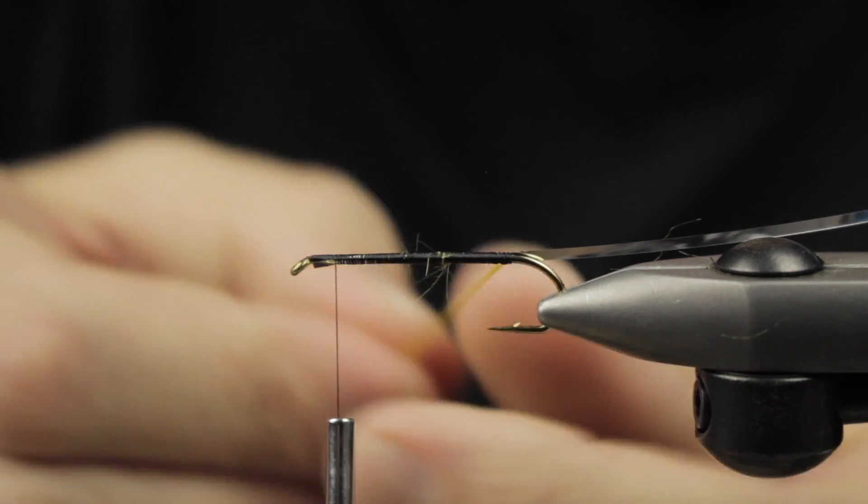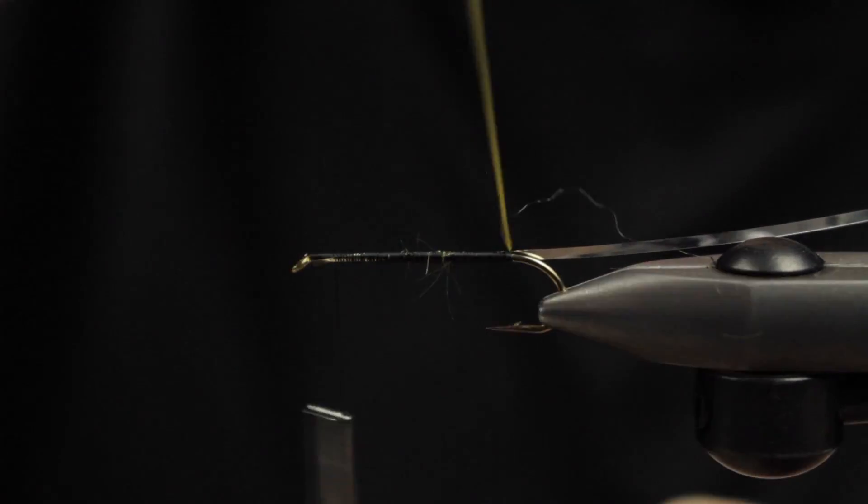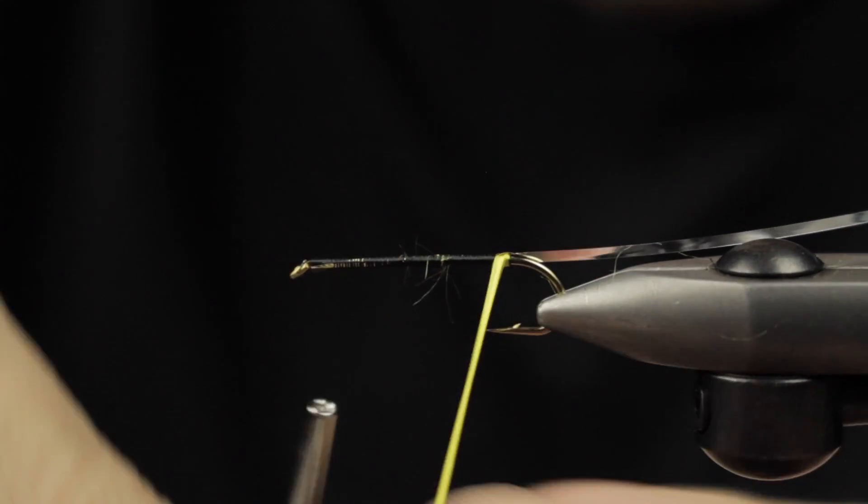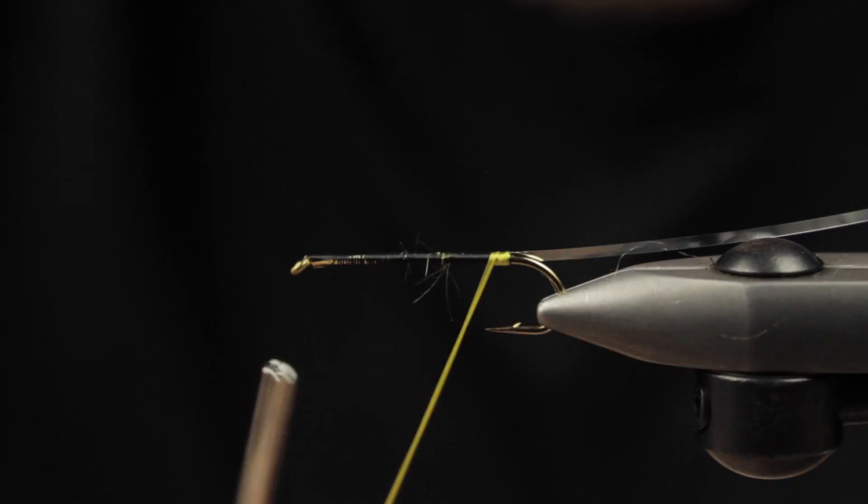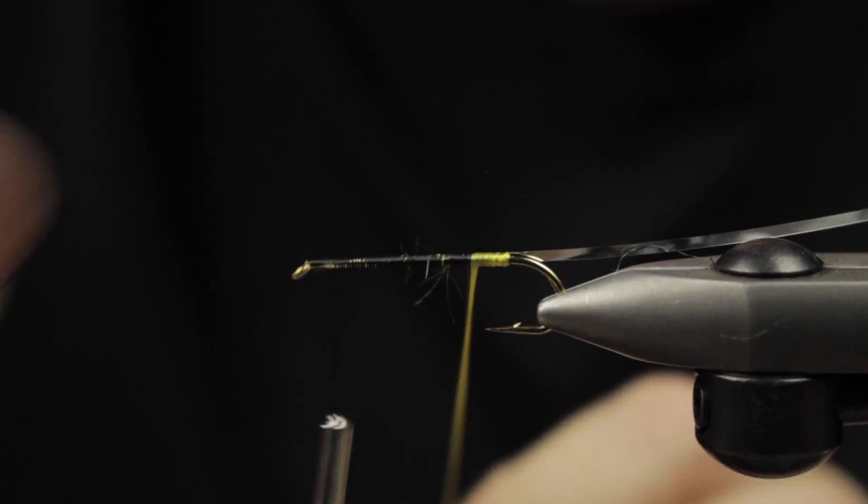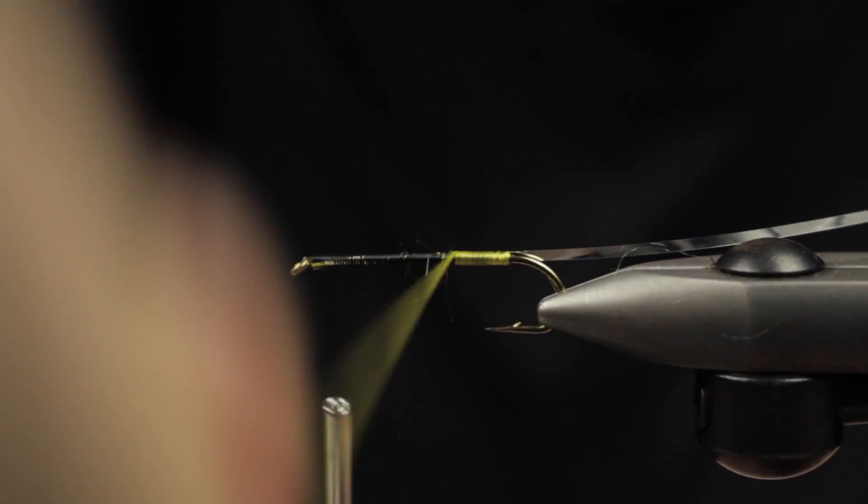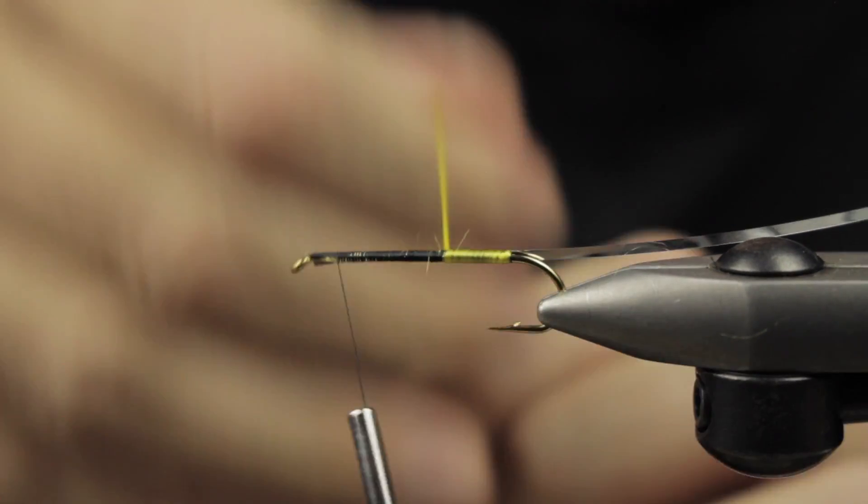As you can see, the floss likes to come apart, so if you just smooth it out and get it a little bit wet, you'll have great results. We'll do connecting turns of floss all the way forward to about where we're going to have our wing on this fly, and the wing is going to be our bucktail in this case.